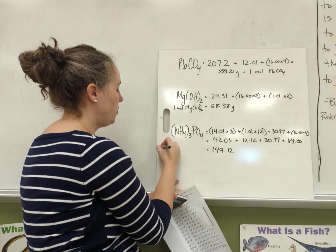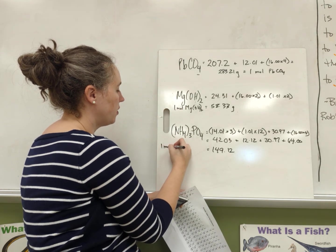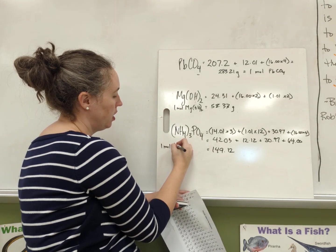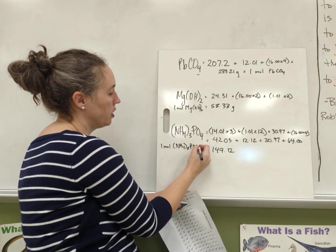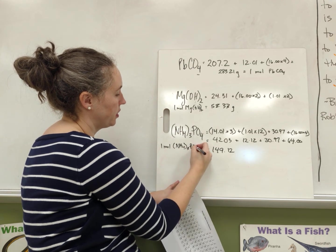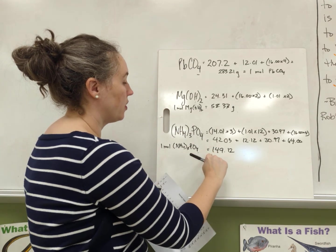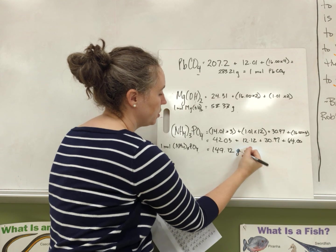So 1 mole of ammonium phosphate, which is (NH4)3PO4, has a mass of 149.12 grams.